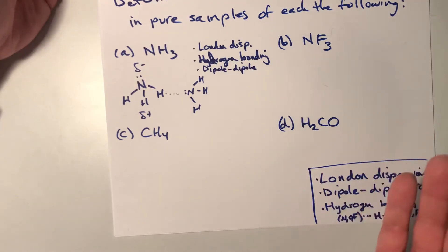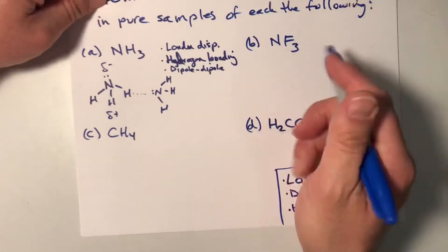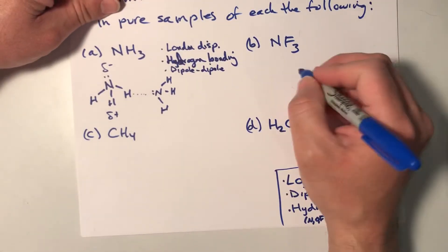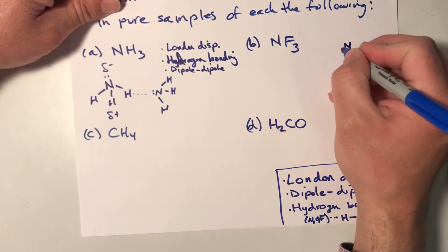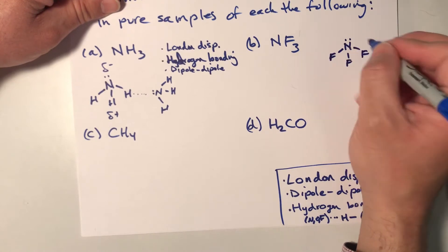Now, a case where there's not this distinction is in NF3. So NF3 is the exact same shape as ammonia. It is still pyramidal.